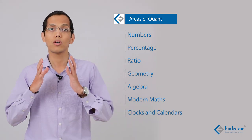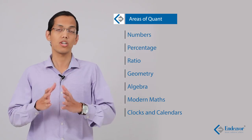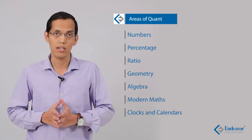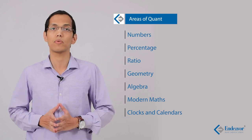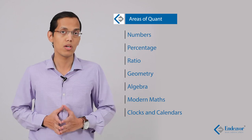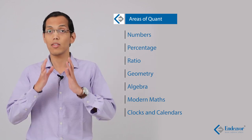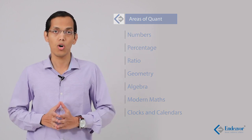This also includes clocks and calendar based questions. The general expectation is that in your months-long preparation for CAT, you should have solved approximately 100 questions per chapter. These 100 questions should include a variety, mostly of easy to medium difficulty level, in sync with the last three years of actual CAT papers.